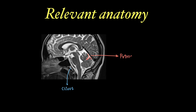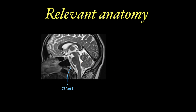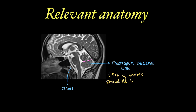Coming to cerebellar fissures in the midline, this is the primary fissure of the cerebellum. The lobe of cerebellum just below the primary fissure is called the declive. The tip of the 4th ventricle protruding within the cerebellum is called the fastegium of the 4th ventricle. In the true midline section, a line drawn from fastegium to declive is called the fastegium-declive line, and 50% of the vermis of the cerebellum should lie below this line — that is normal anatomy.